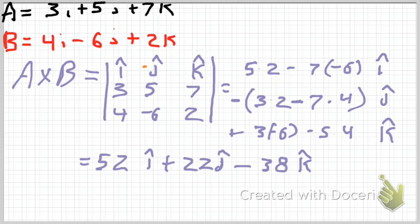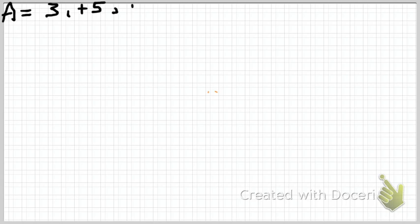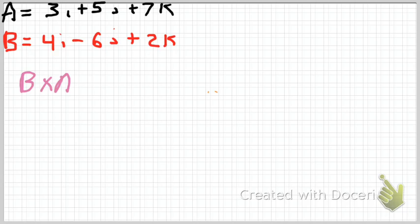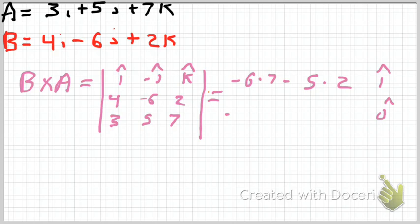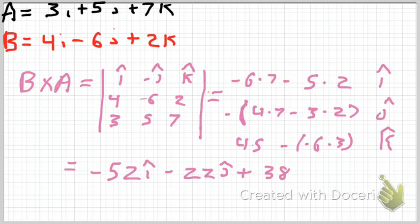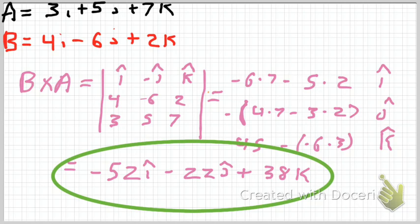When we take b dot a, we should come up with the same vector, but in the opposite direction. So, we'll see how that happens. We're going to set up our same matrix again, but instead, the b terms will be above the a terms, and that's going to make all the difference. So, we're still going to do, set everything up. Remember, the j term is negative. Set it all up, and what we're going to find is we find the exact same vector, but in the negative direction. I certainly hope this helps, and good luck.